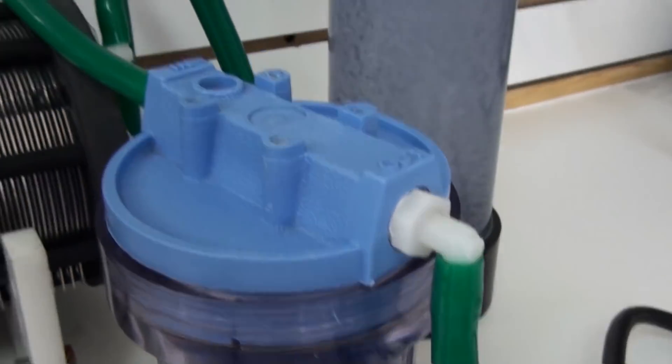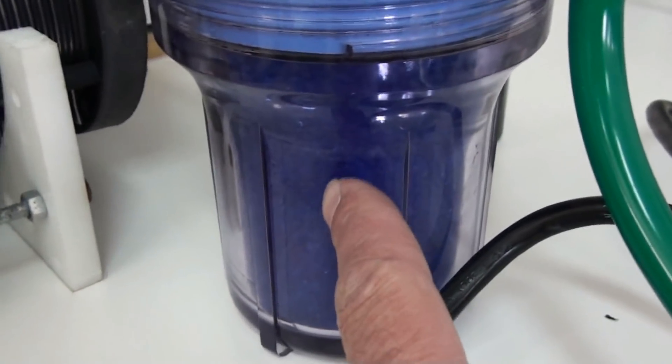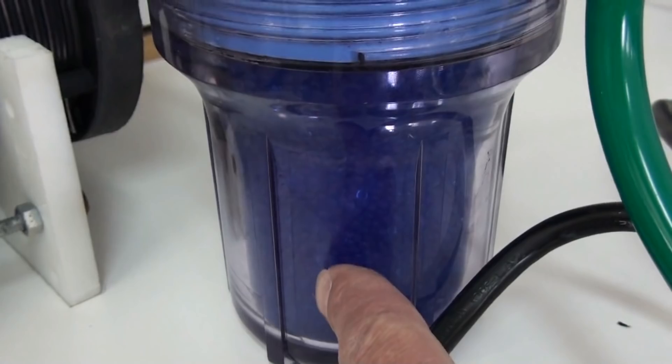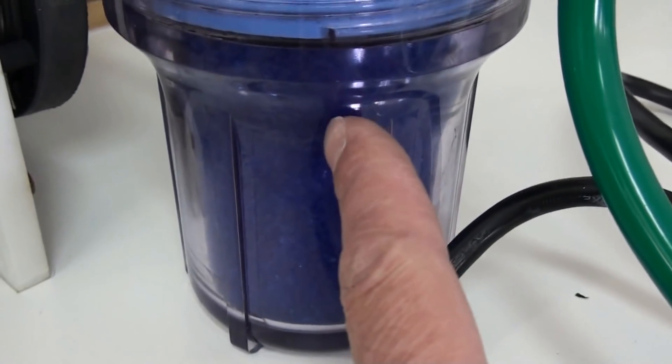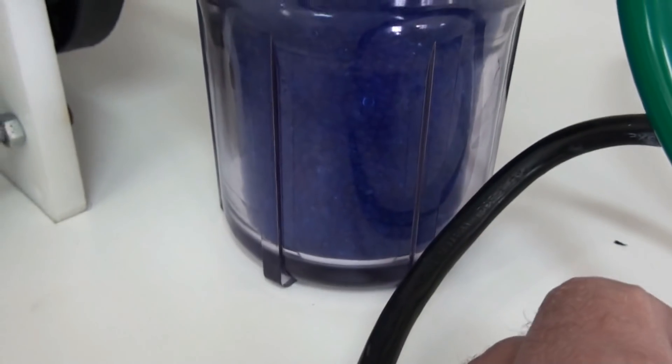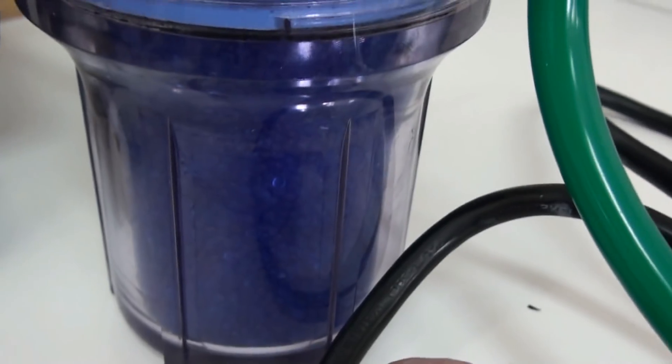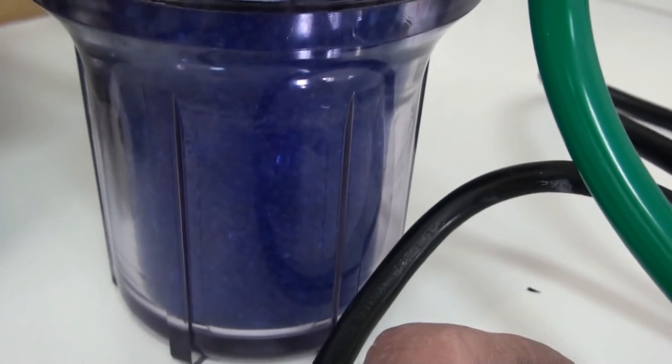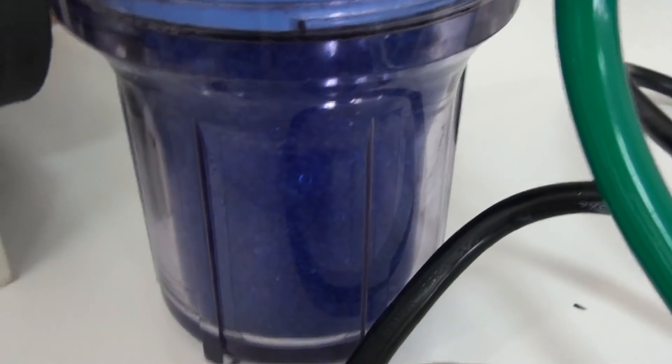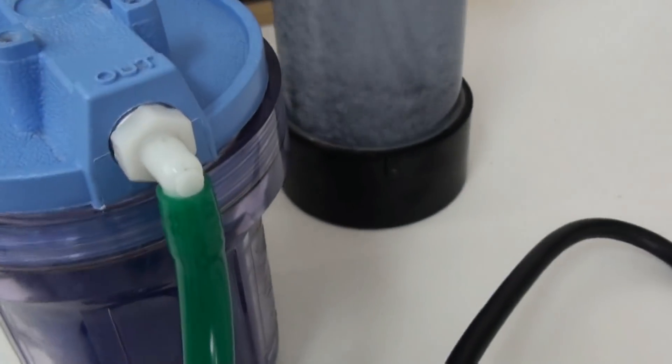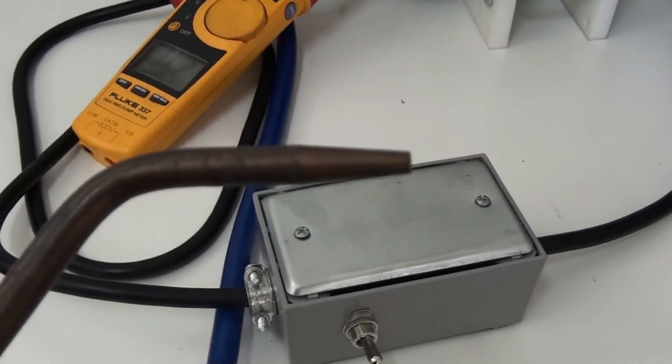This flashback arrestor does double as a dryer. These are our desiccant beads in here. So they'll take all the moisture out of the oxyhydrogen gas. And when these beads turn pink, that means they have absorbed as much moisture as they can. You can recharge these. I have a video that can show you how to do that.